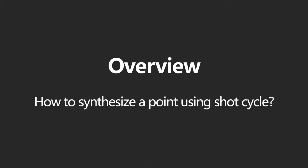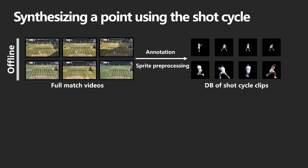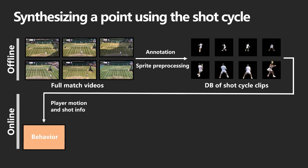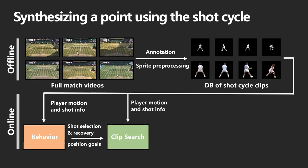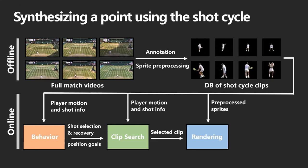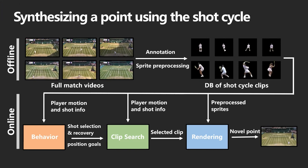We use the structure provided by our shot-cycle state machine to synthesize novel points from real-world footage. Starting with unannotated broadcast tennis videos, we first extract the shot-cycle clips and organize them into a database. To make our tennis players behave like real-world players, we build player-specific behavior models from the database examples. These models predict shot selection and player recovery position goals. Next, we select the shot-cycle clip where the player best meets desired behavior goals. Finally, to make the synthesized tennis players look realistic, we manipulate these video clips to ensure visual continuity, such as adjusting lighting conditions. The result of this process, repeated for multiple shot-cycles, is a synthesized novel point.